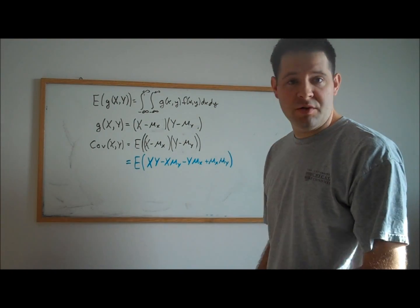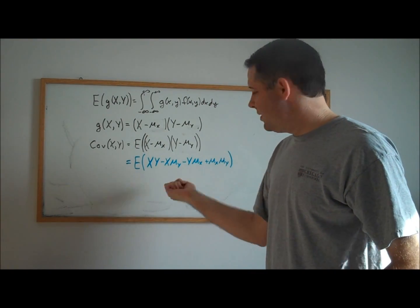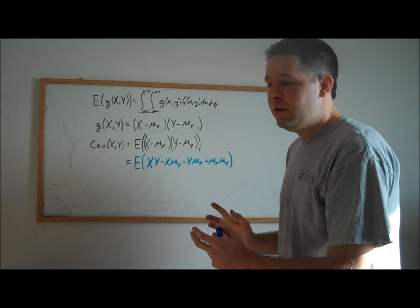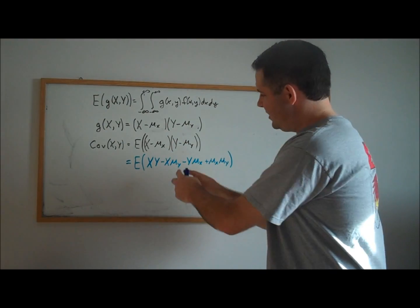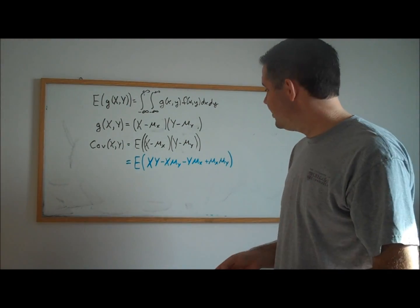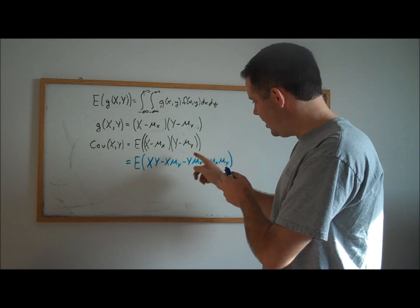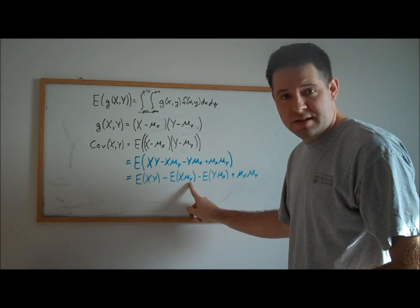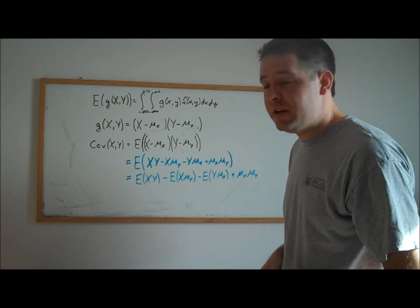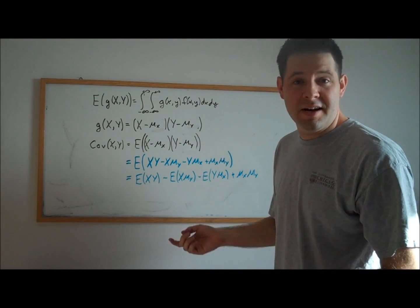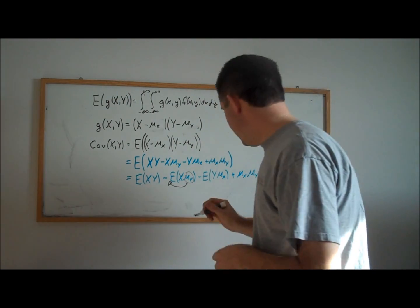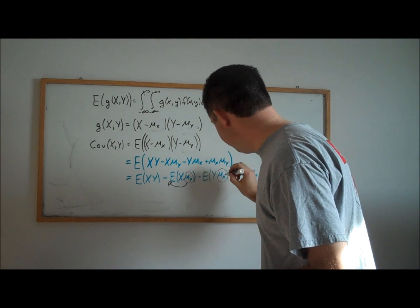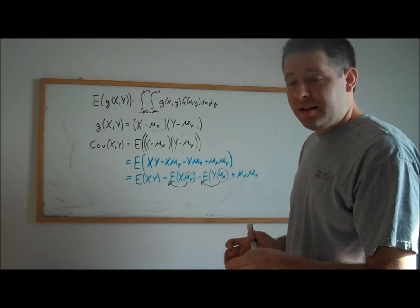This is just a function of X and Y. These mu's you can think of as constants. If you think of this expectation as an integral, the integral of the sum is the sum of the integrals. We can break this expectation up into each of its respective parts. This is a constant, so we can bring mu_X and mu_Y out of the double integral.